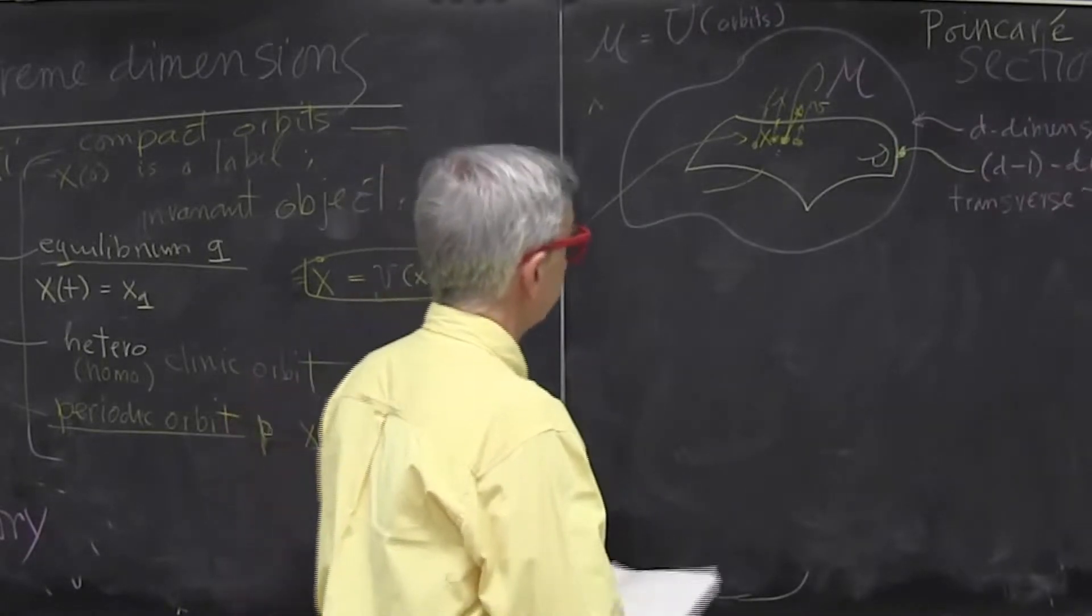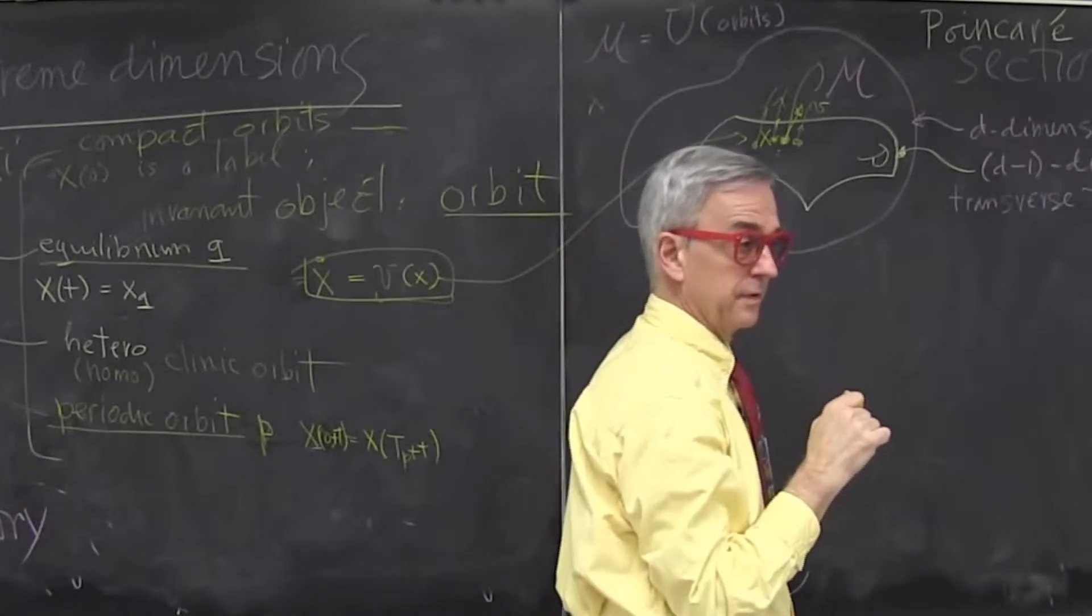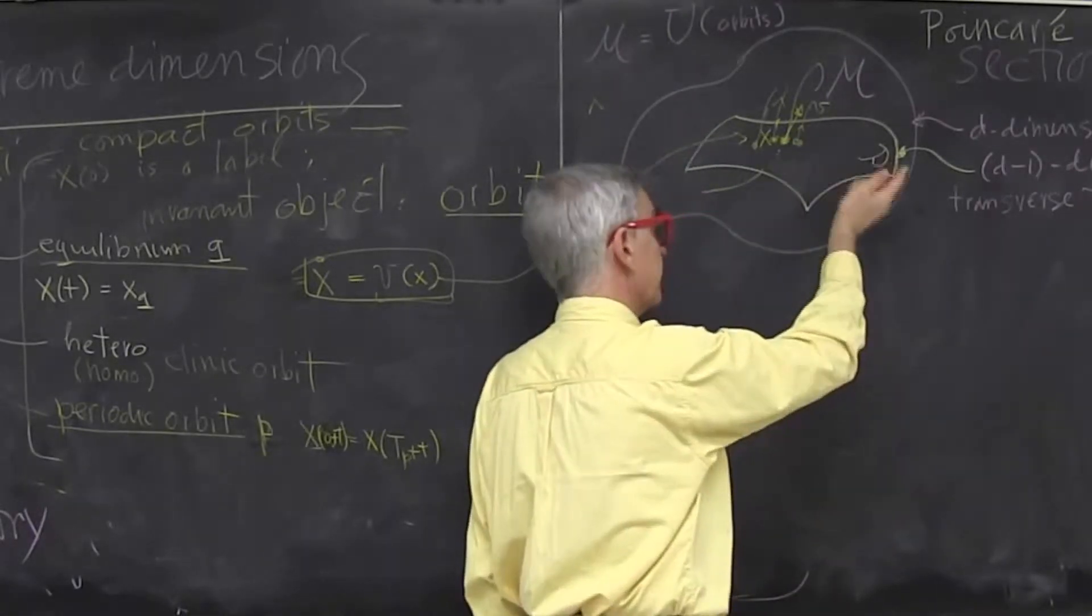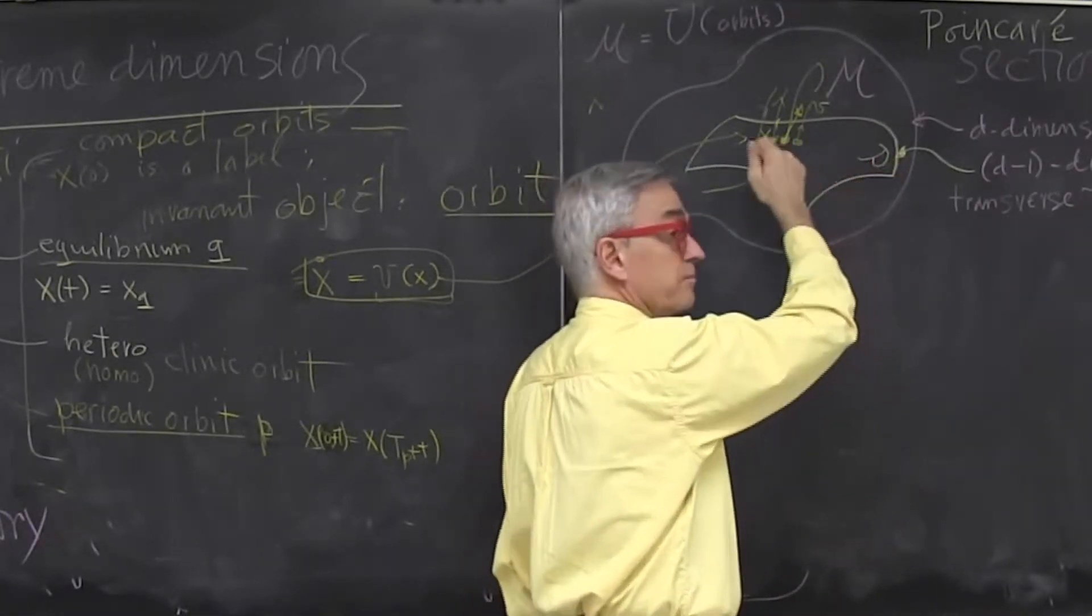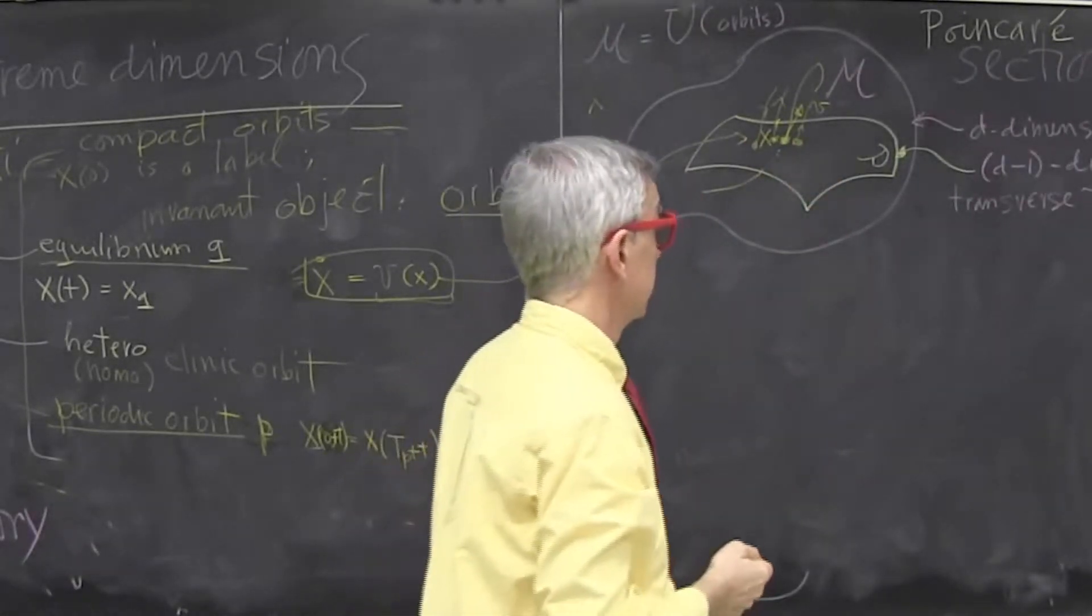So that was Poincaré's idea. It seems very simple because the trajectory is one dimensional curve and intersection with Poincaré's section is point. So you can really visualize this stuff. However,